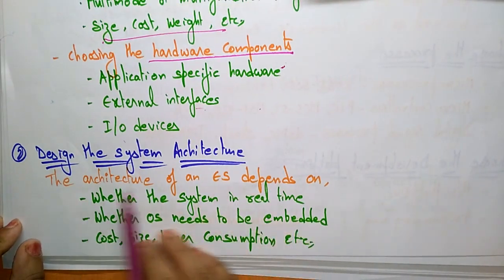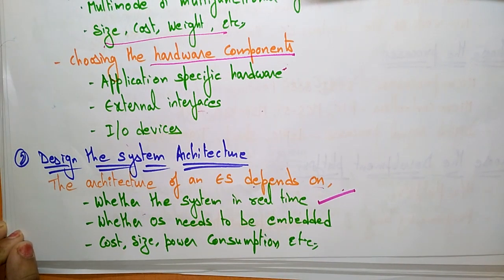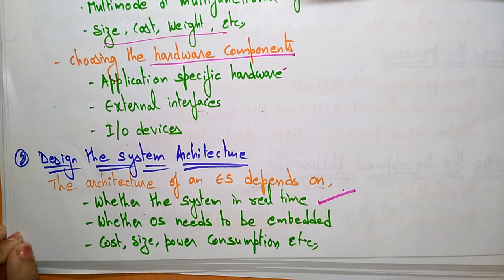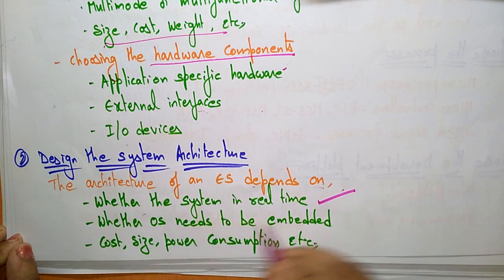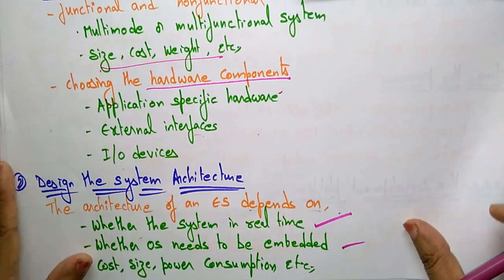The second step is to design the system architecture. The architecture of an embedded system depends on whether the system operates in real time. For example, if you are designing a component for an aircraft, it works on a real-time system, so you need to check whether your system is real-time or not. You also need to consider whether the operating system needs to be embedded, and account for cost, size, and power consumption.